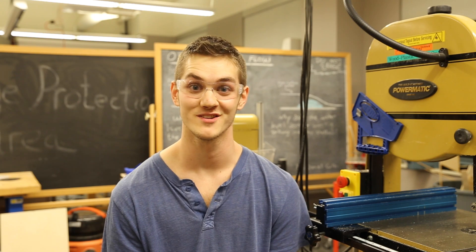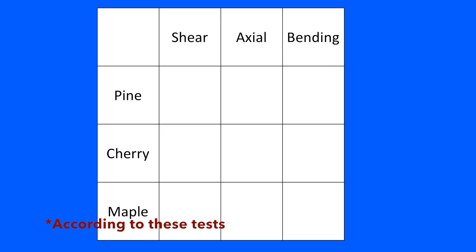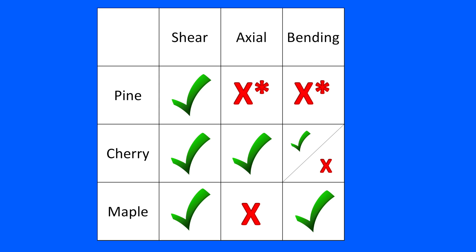All right, let's take a look at the results. For all three shear samples, the glue was successful. For the axial tests, the glue was successful for the cherry, pretty much unsuccessful for pine, and unsuccessful for maple. As for bending, it was successful on the maple, unclear on the cherry, and pretty much unsuccessful for the pine.